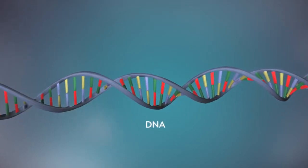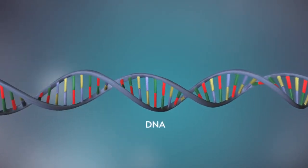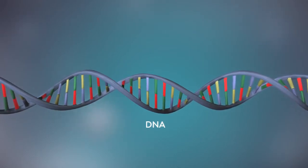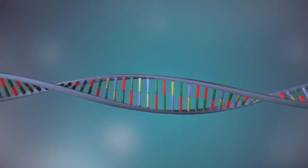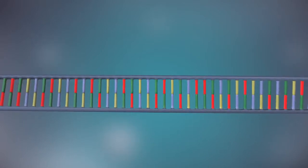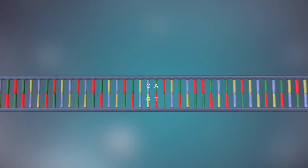DNA is a molecule made up of two strands, twisted around each other in a double helix shape. Each strand is made up of a sequence of four chemical bases, represented by the letters A, C, G and T.